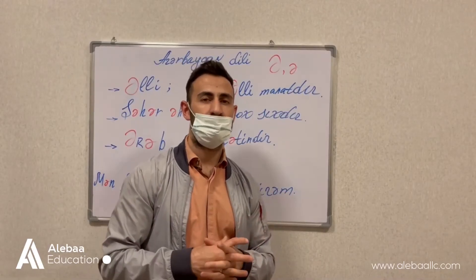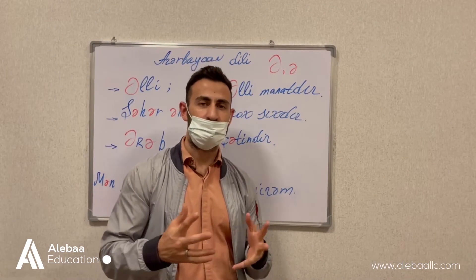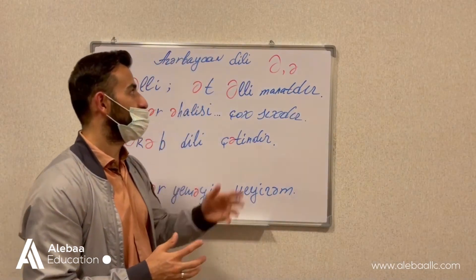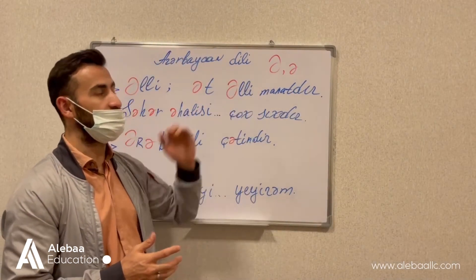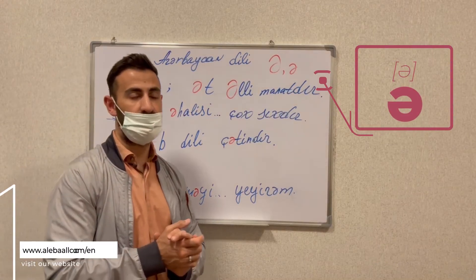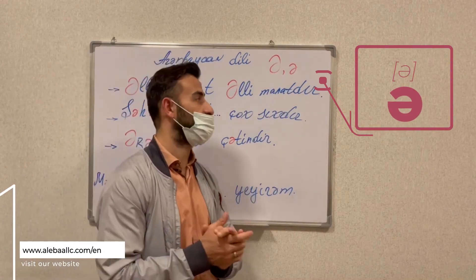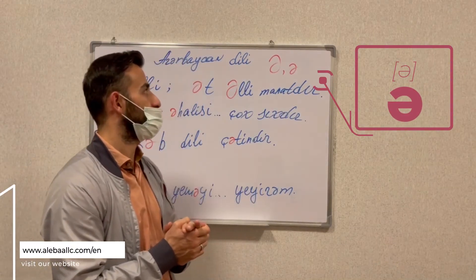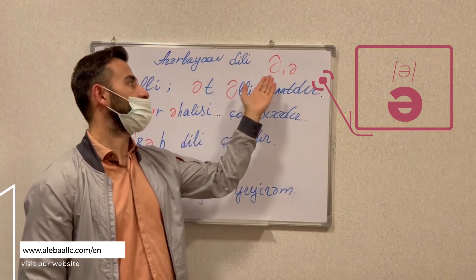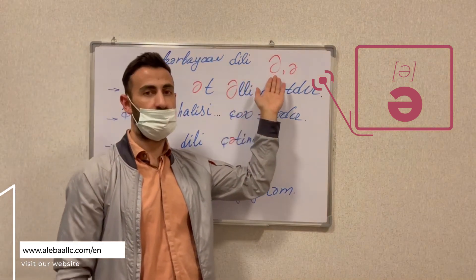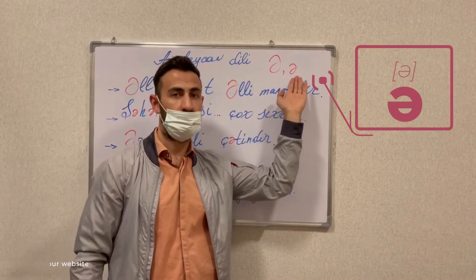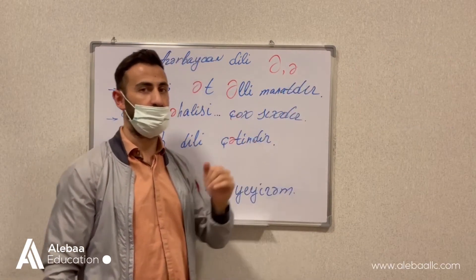Hi guys! Welcome back to our next episode. In this episode, we are going to explain you the letter Ə, which is the sixth letter of the alphabetic sequence of the Azerbaijani language. Ə is a vowel sound. Here is the capital writing and here is the small writing — no different to each other.